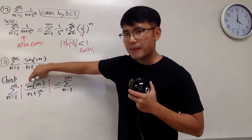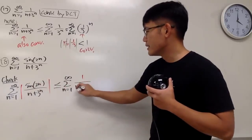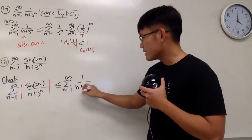Now, the top is less than 1, so the whole fraction like this is still, this is still less than that, so we have that.